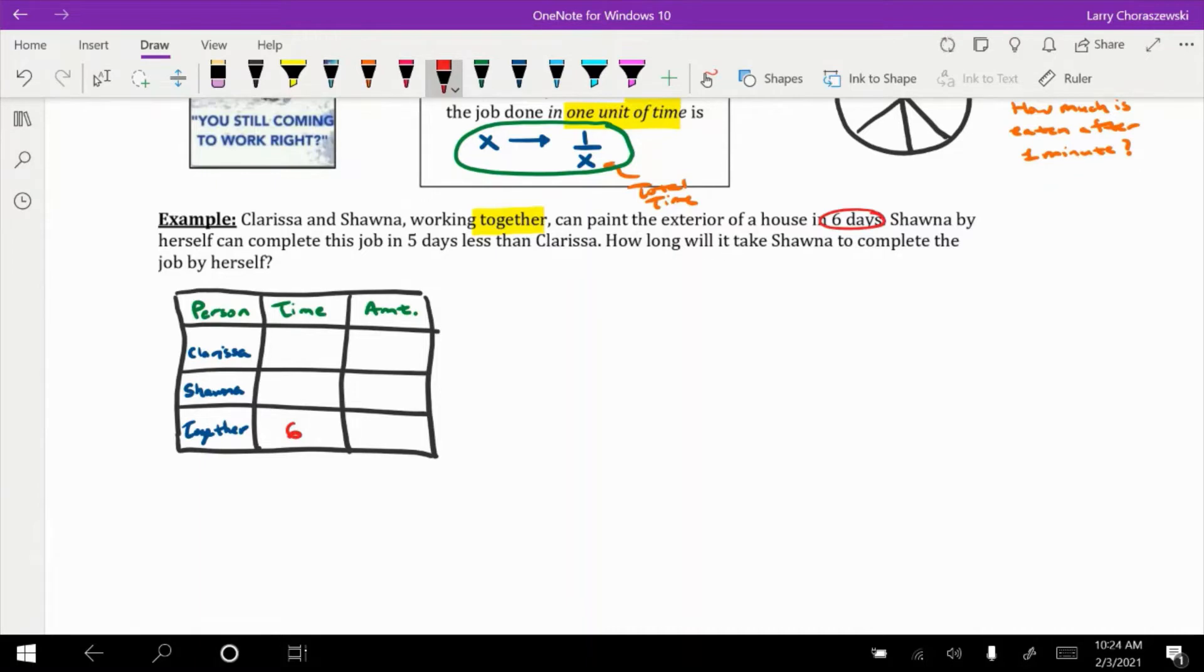So what would that mean about the amount of the job, the amount of the job done after just one day? What would that be? I'll keep in mind our constant rate job formula. So one-sixth. Yep. So maybe this might help. We'll put x above time and 1 over x above the amount.